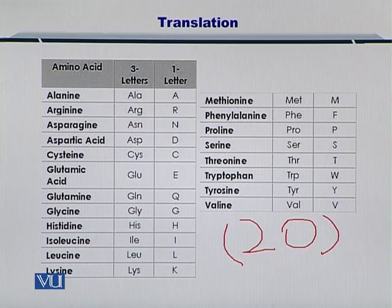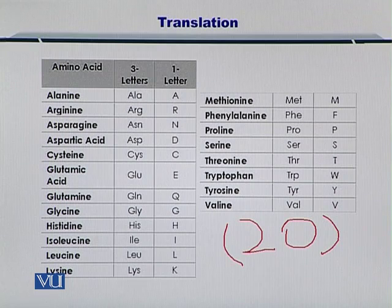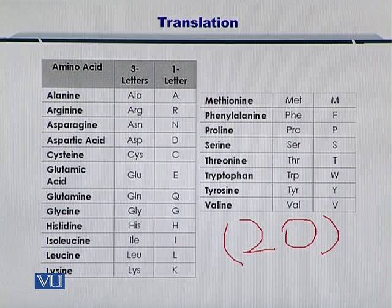The remaining amino acids are glycine, histidine, isoleucine, leucine, lysine, methionine, phenylalanine, proline, serine, threonine, tryptophan, tyrosine, and valine. So these 20 amino acids can be encoded by an mRNA molecule.